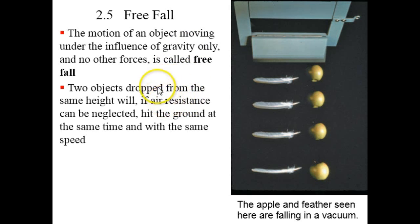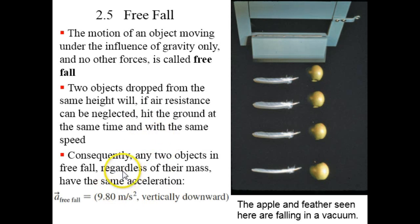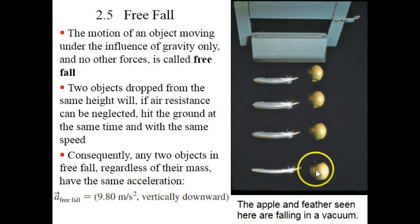Two objects which are dropped from the same height will, if air resistance can be neglected, hit the ground at the same time and with the same speed. So any two objects that are in free fall, regardless of their mass, have the same acceleration, which turns out to be 9.80 meters per second squared downward.